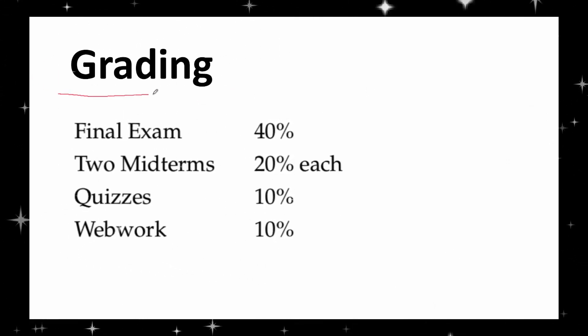Grading system. Math 2B will be graded according to the following breakdown. The final exam is worth 40% of your final grade. Two midterms are worth 20% each. All quizzes will contribute 10%. WebWork will also contribute 10% to your final grade.